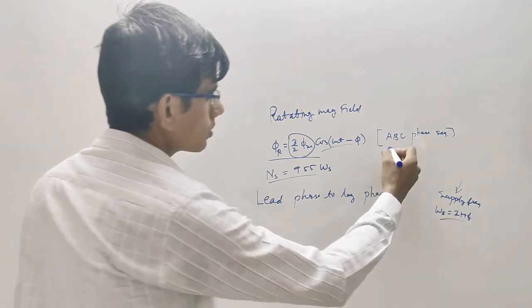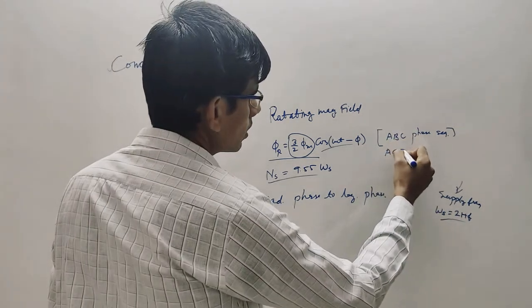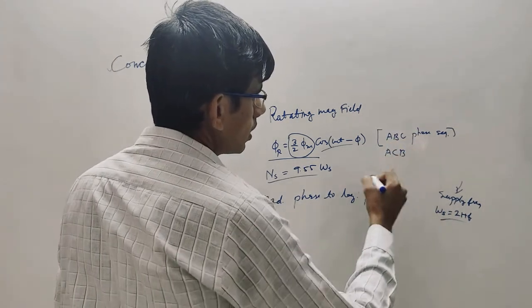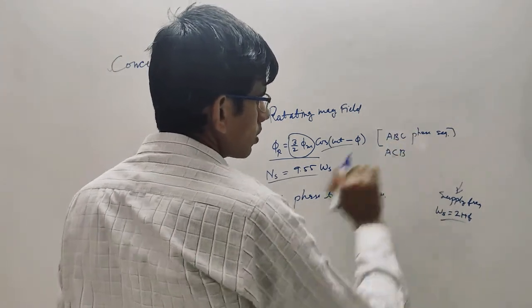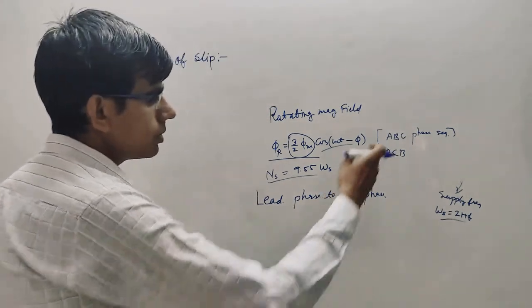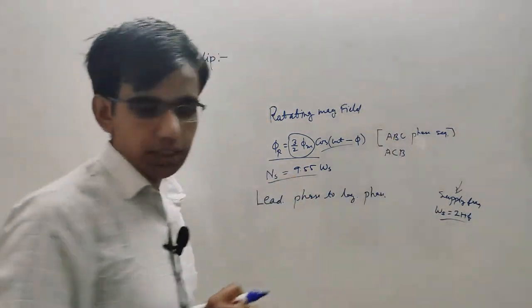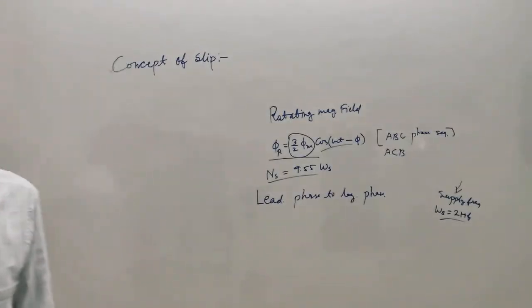If you reverse any two phases — say from a, b, c to a, c, b — then the direction of the Rotating Magnetic Field will be reversed from whatever it was originally.